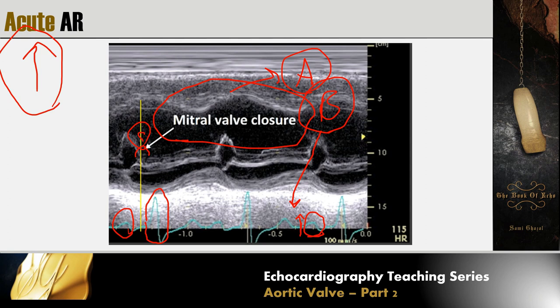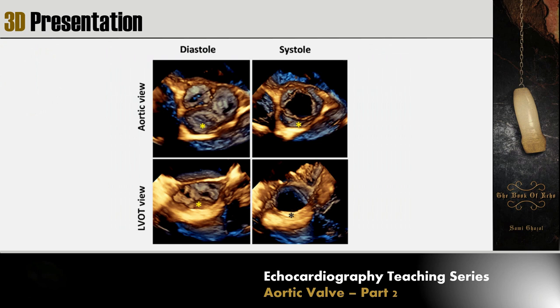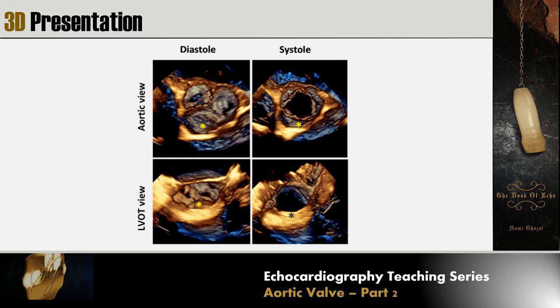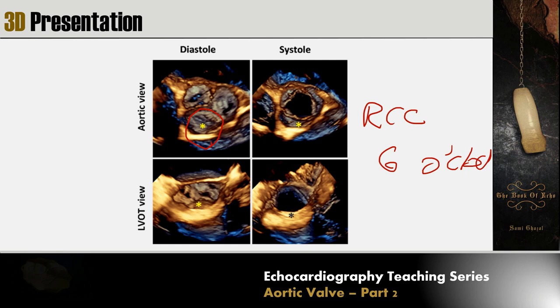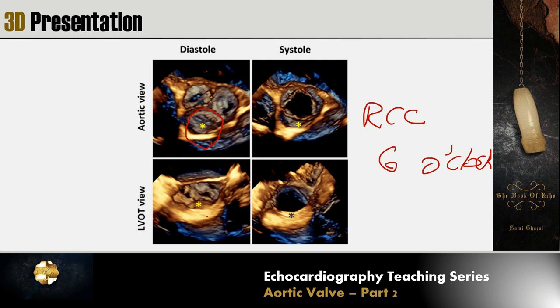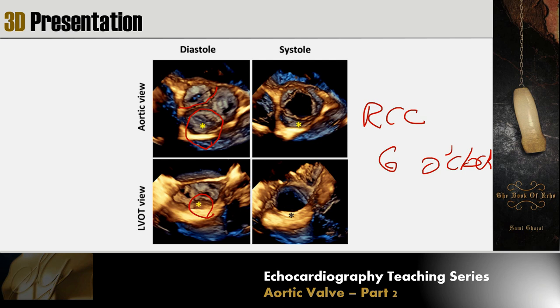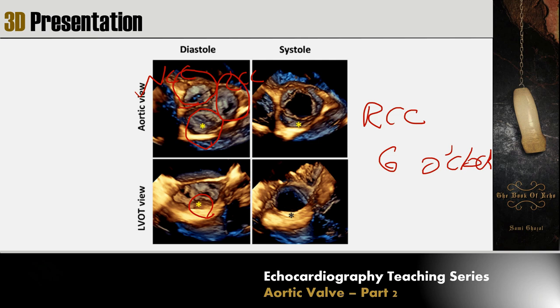To complete aortic valve assessment with 3D echocardiography, we align the right coronary cusp at the 6 o'clock position. Whether viewing from the aorta downward or from the LVOT upward, the RCC remains at 6 o'clock. From the aortic view with RCC at 6 o'clock, the non-coronary cusp is on the left and the left coronary cusp is also on the left; from the LVOT perspective, their positions are reversed.